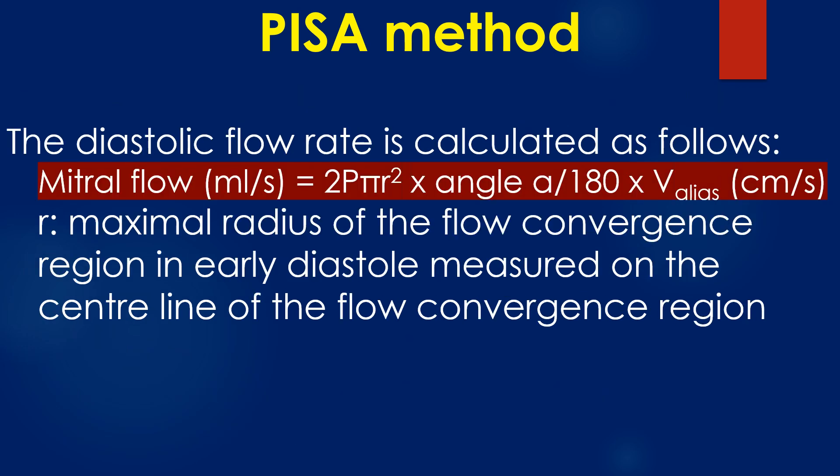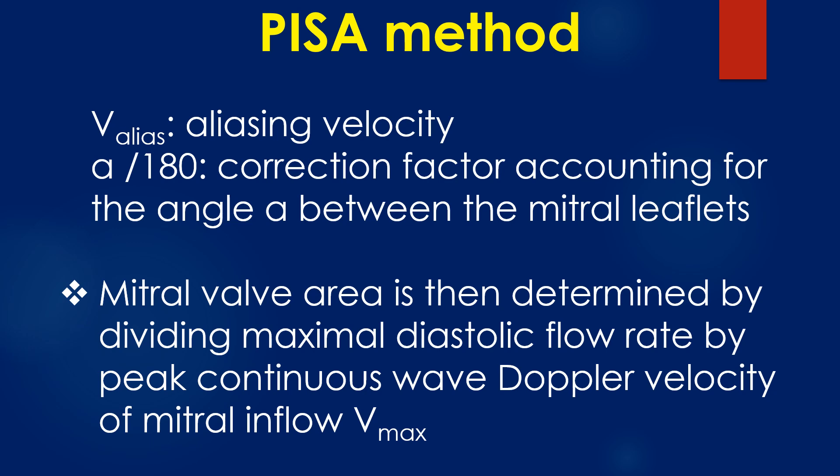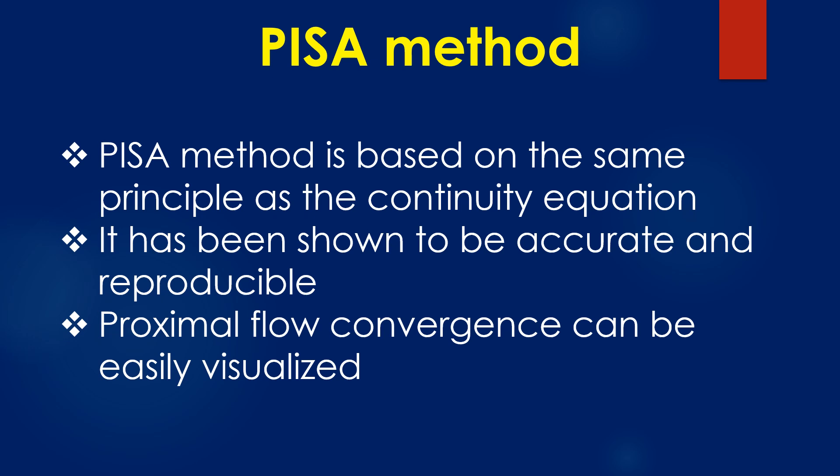The diastolic flow rate is calculated as follows: Mitral flow equals 2πr² × (angle α / 180) × aliasing velocity. R is the maximal radius of the flow convergence region in early diastole, measured on the central line of the flow convergence region. V-alias is the aliasing velocity; α/180 is the correction factor accounting for the angle α between the mitral leaflets. Mitral valve area is then determined by dividing the maximal diastolic flow rate by the peak continuous wave Doppler velocity of mitral inflow, i.e., V-max. The PISA method is based on the same principle as the continuity equation and has been shown to be accurate and reproducible, with proximal flow convergence easily visualized.